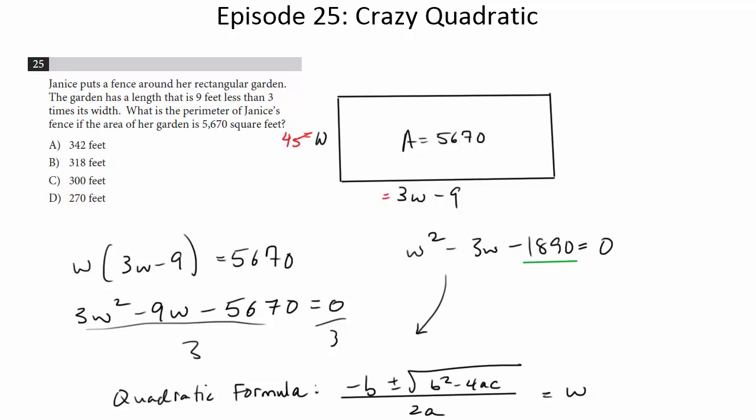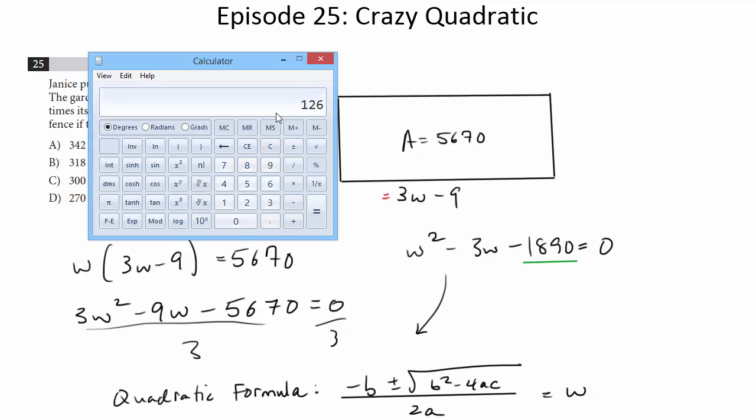The length, then, is going to be 3 times 45 minus 9. Gets us 126. We know this is 126. We know this is 45.